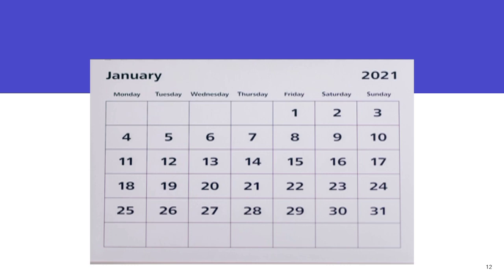Now, if the duration of the menstrual cycle is 28 days, if you subtract 14 from 28, it will give you 14. So on the 14th day of your cycle, that is the most probable day that you are going to ovulate.